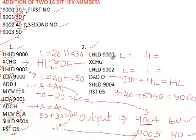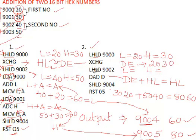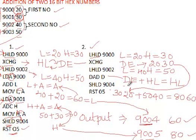The second method uses the DAD instruction. First, we use LHLD 9000 to load the first number 20-30 into the HL pair. Then XCHG moves that first number into DE, making HL empty. Next, we load the second number 40-50 from addresses 9002 and 9003 into HL. So at this point HL has 40-50 and DE has 20-30. Using DAD D, which performs double add, DE is added to HL simultaneously as a full 16-bit number, with the answer stored in HL.